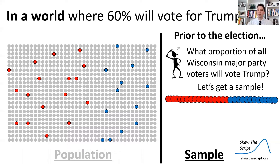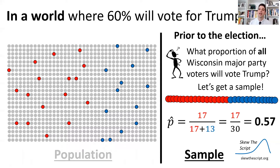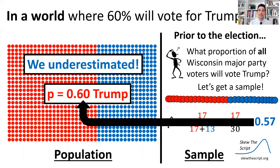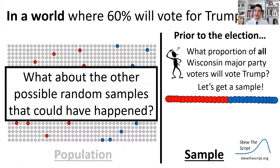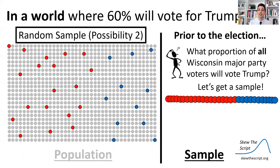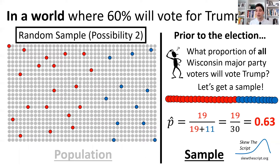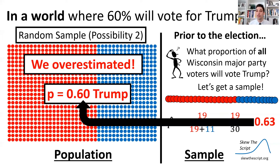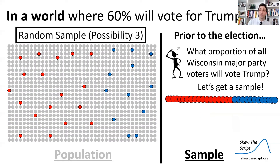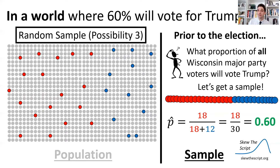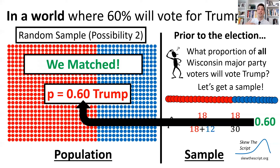You take a poll, randomly sample 30 Wisconsinites, and 17 out of 30 said they would vote for Trump — that's 57% of your sample. So in this case, you underestimated the true proportion. But you can imagine other possible polls from a different random sample. Someone else might get 19 out of 30 voting Trump, overestimating the proportion. Or a third poll where 18 out of 30 said Trump — that pollster would get the exact matching value and a highly accurate prediction.